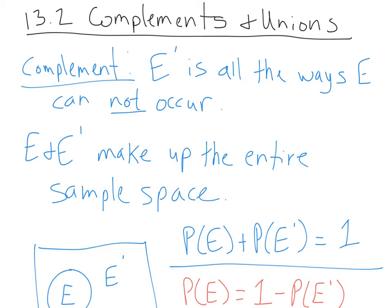E-prime, or E complement, is all the ways E cannot occur. If you're rolling a die and your event is rolling a three, that would be E, and E complement would be all the other numbers: one, two, four, five, and six. So it's literally the complete opposite of your event. E and E complement make up the entire sample space, because you either roll a three or you roll something else — there are no other outcomes.